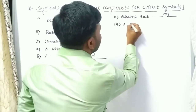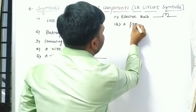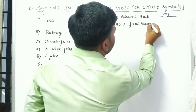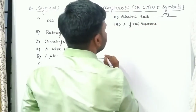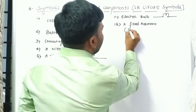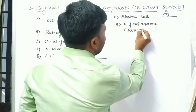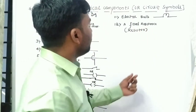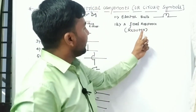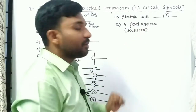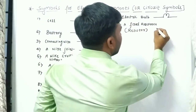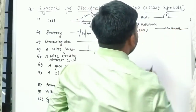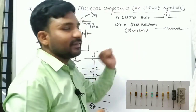Next is a fixed resistance, also called a resistor. We will learn the meaning of resistance and resistor in the next topic; for now, just remember the symbol. The symbol for the resistor is a rectangle.